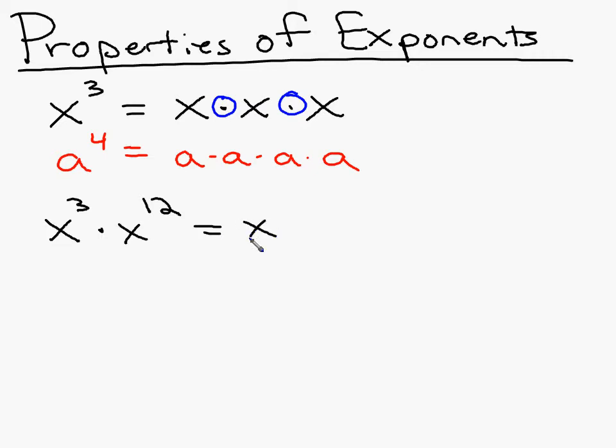It would be x, and it's not going to be to the thirty-sixth power. Think of this. Doesn't this mean x times x times x? This is going to be to the fifteenth power. And that leads us to our first property of exponents.